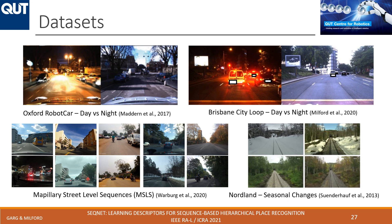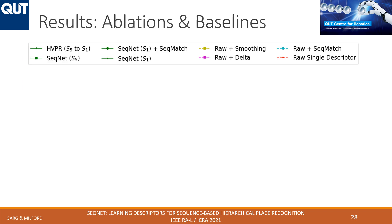To benchmark our proposed method, we used four challenging publicly available datasets, each with individual characteristics in terms of changing appearance or viewpoint conditions — such as day versus night or summer versus winter — and also testing generalization across different cities. In the results, HVPR refers to our proposed hierarchical approach, where sequential descriptors guide single-image-based sequence score aggregation. We include sequential descriptor results, single-image results, and results for sequence score aggregation over single images not guided by any sequential descriptor.